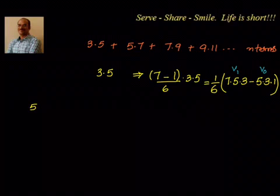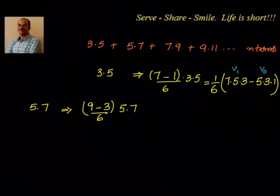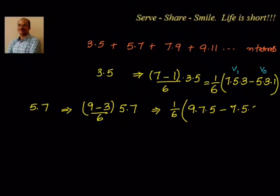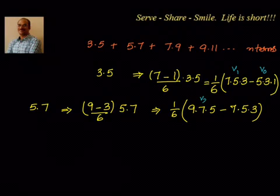Similarly for the next term 5×7: after 7 comes 9, and before 5 comes 3. They are in arithmetic progression, so that's 9 minus 3 divided by 6, multiplied by 5×7. This equals 1/6 × (9×7×5 − 7×5×3). You can see that if I add the first term and the second term, 7×5×3 gets cancelled. This second term gives V2 = 9×7×5 and V1 = 7×5×3.